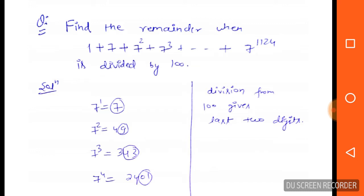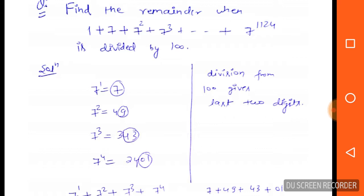You have to understand that division by 100 gives the last two digits. If you divide any number by 100, you will get the last two digits.